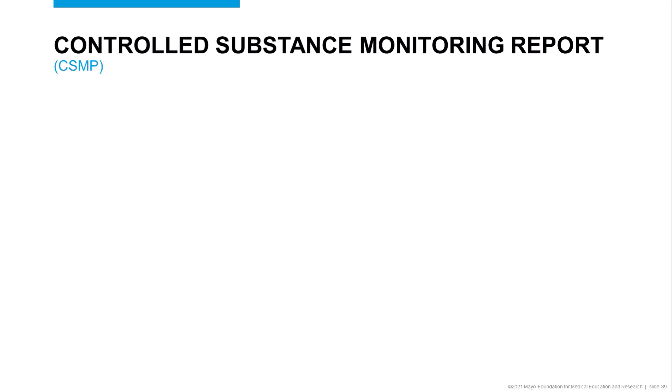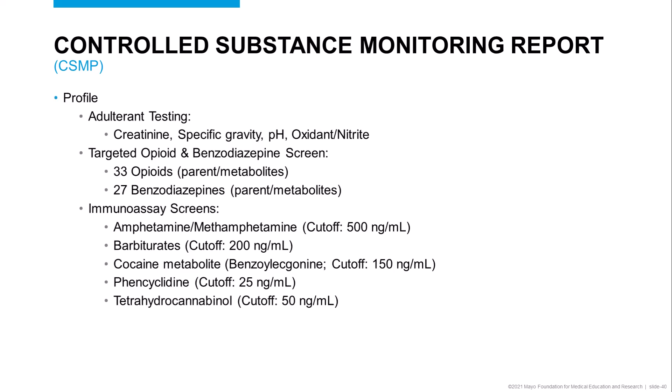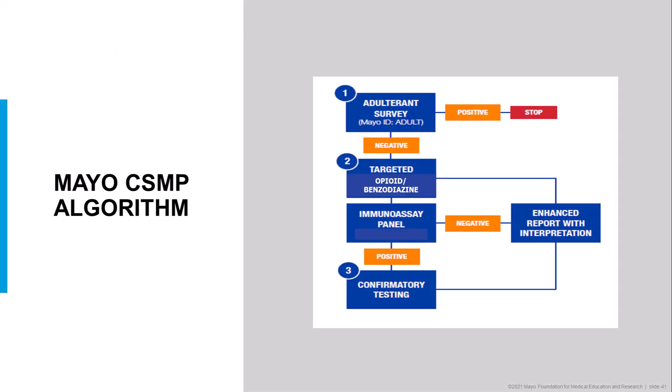In addition to being a separate standalone test, the high-resolution targeted benzodiazepine screen will also be available as part of the controlled substance monitoring panel. The controlled substance monitoring panel starts with adulterant testing, looking at creatinine, specific gravity, pH, and oxidants. It includes both the high-resolution targeted opioid and benzodiazepine assays, along with traditional immunoassays for common drugs of abuse. Per the algorithm, adulteration or specimen validity testing is performed first; if the sample is adulterated, testing stops and no charge is issued. If not adulterated, testing resumes with the targeted screens and immunoassays.